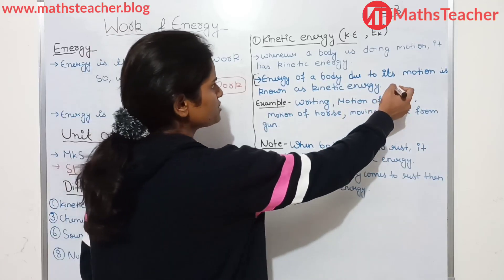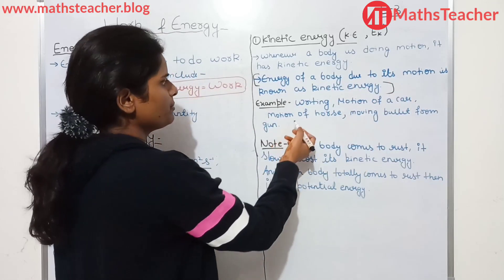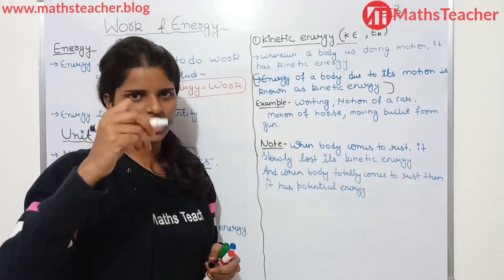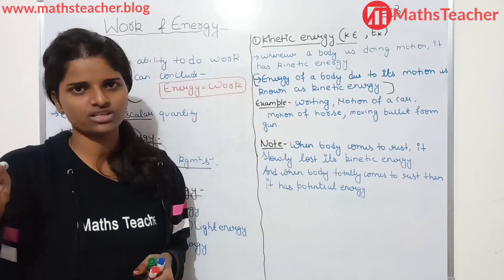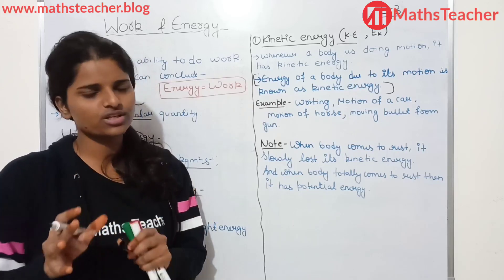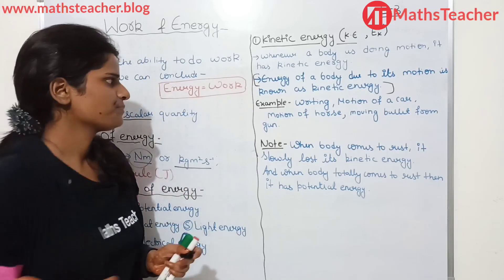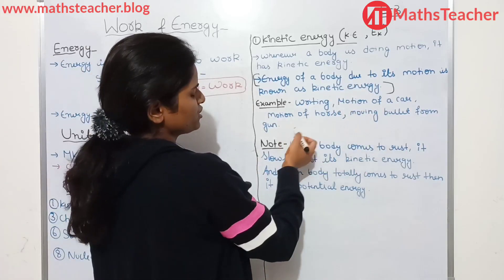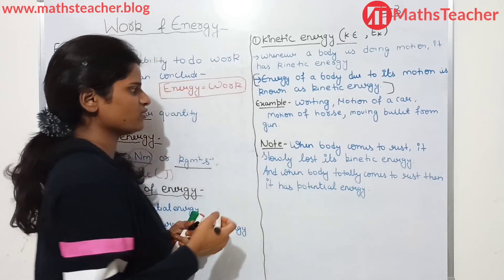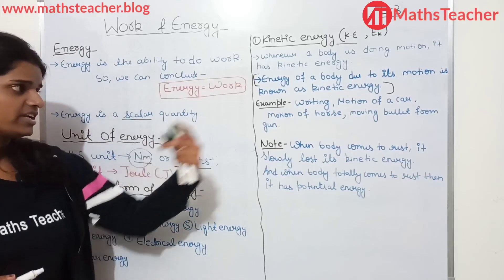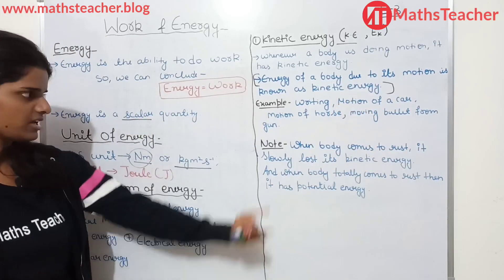For example, as you write, your hands change position — change in position means there is motion — so which energy will exist? Kinetic energy. Motion of a car, motion of a horse, a moving bullet from a gun — the bullet is in motion, so the bullet will have kinetic energy, not the gun.